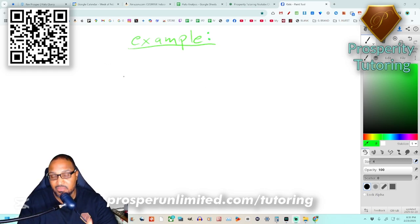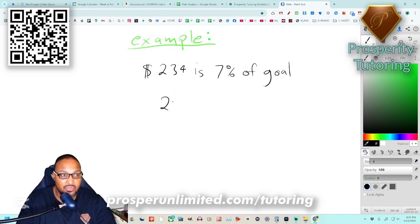Now this situation I want you to pay close attention to because it's gonna be a little tricky. We're gonna have to solve things backwards using a little bit of algebra. Let's say I made two hundred and thirty-four dollars and that two hundred thirty-four dollars is only seven percent of my goal.